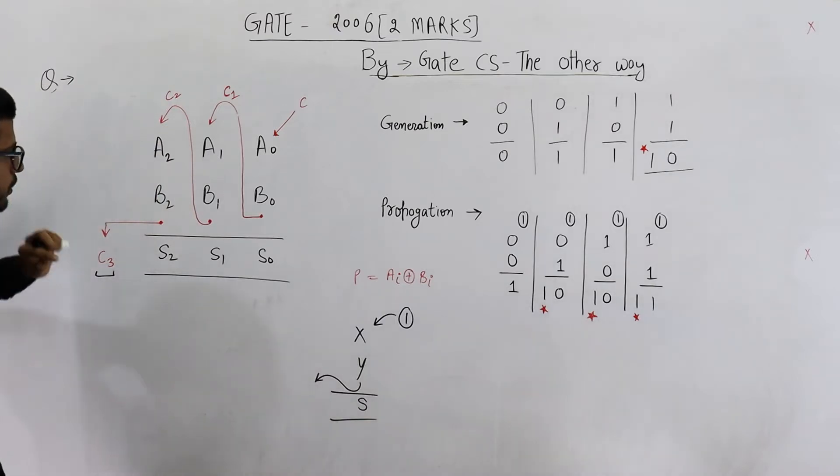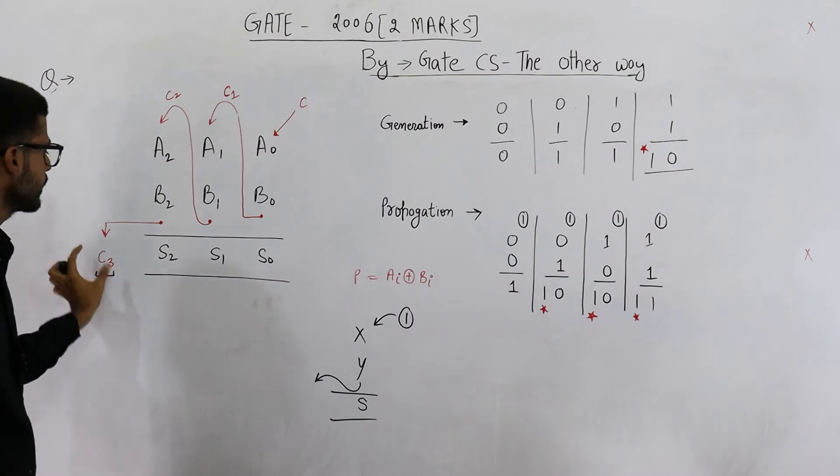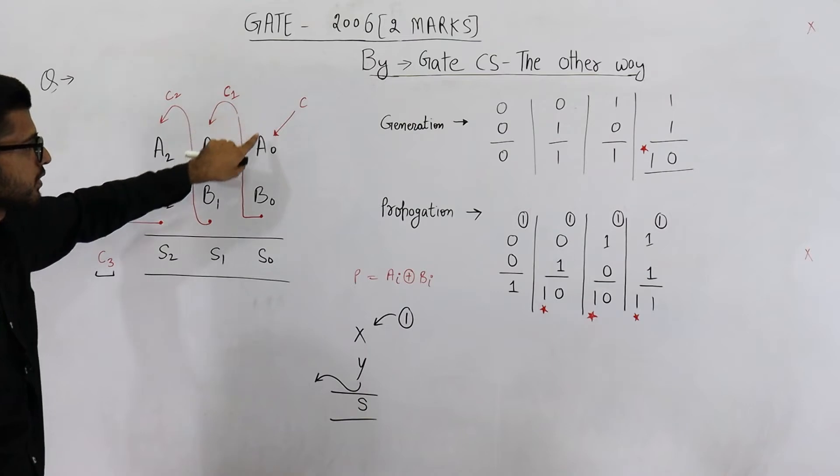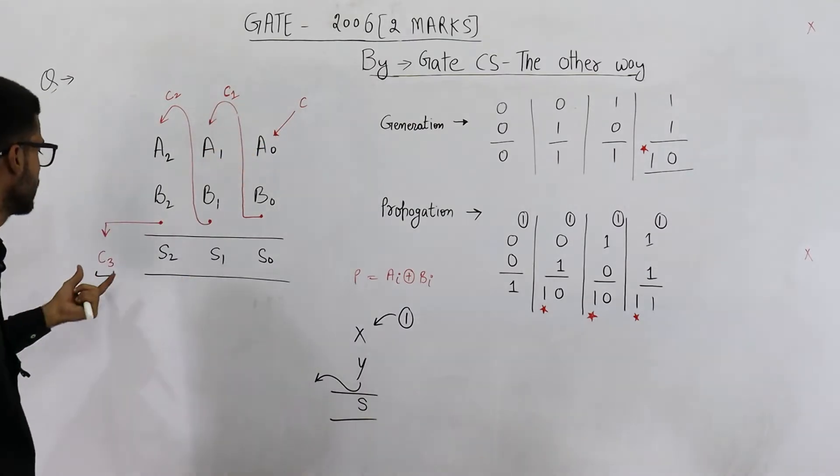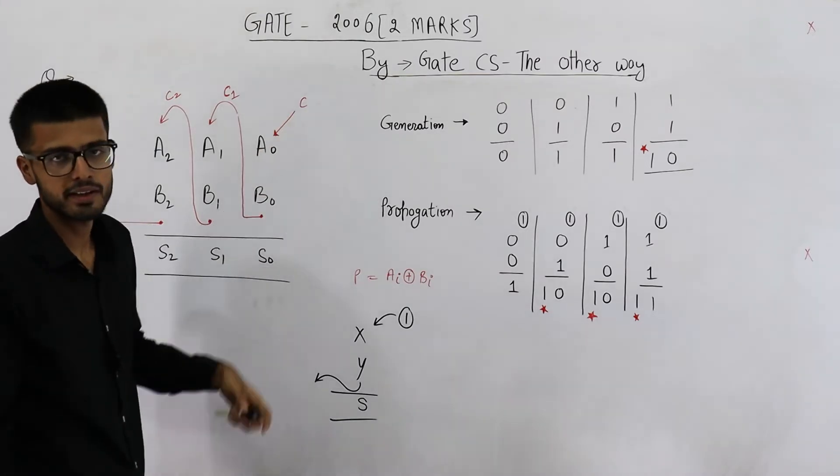That means if you substitute the value of C2, you will get equation of C3 in terms of C1, A1, B1, A2, B2. Now what you can do is you can again eliminate this C1 by substituting the value of C1. C1 is expressed in terms of C. That means C3's equation is going to contain C.